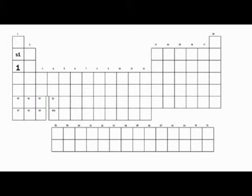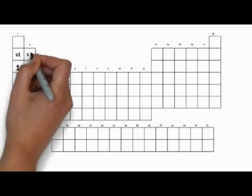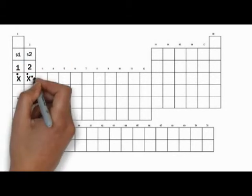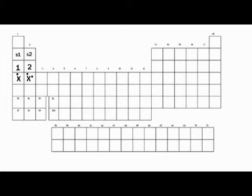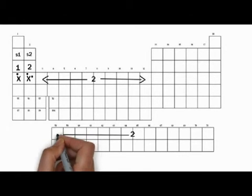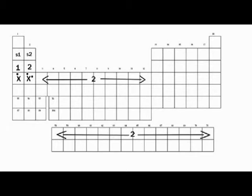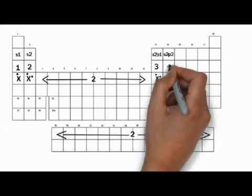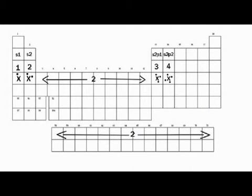If you remember from when we learned about electron configuration, there's a distinct pattern in the periodic table. Everything in the first column ends with S1, which means it's going to have one electron in the highest occupied energy level and a Lewis diagram with one electron. Everything in the second column ends with S2, so it has two dots. This holds true for the entire D block and F block. When we get over to boron's column, the last term will be S2P1, meaning three electrons in the highest occupied energy level, and the Lewis diagram will have three dots.